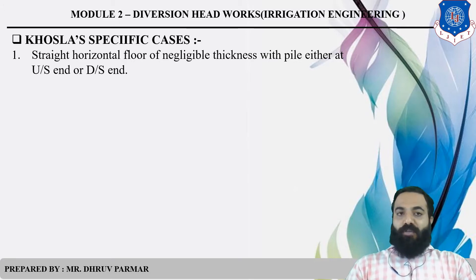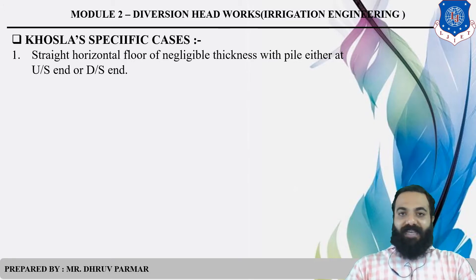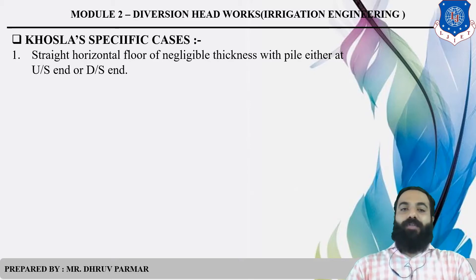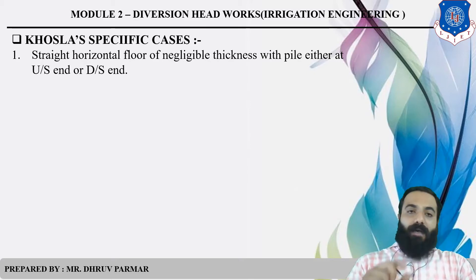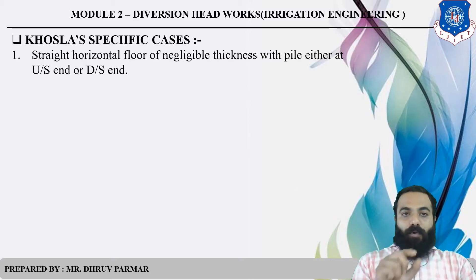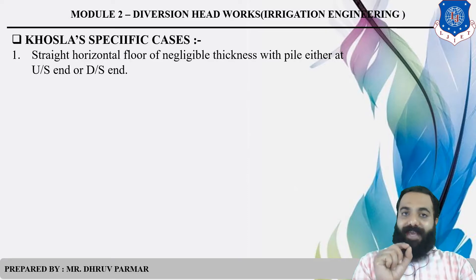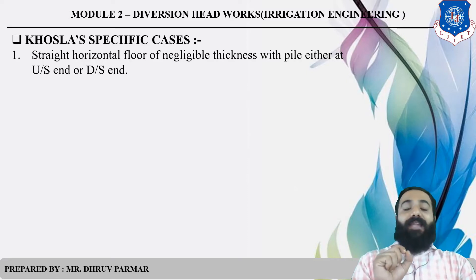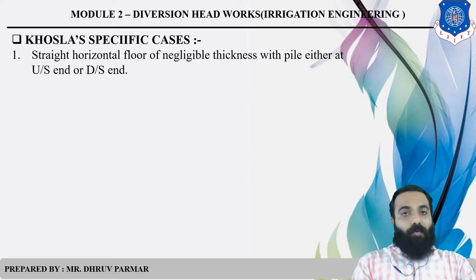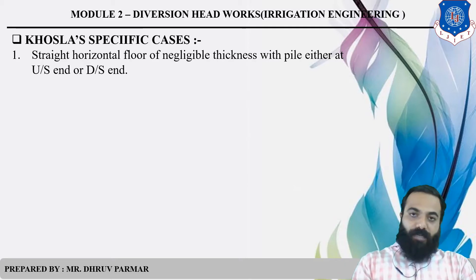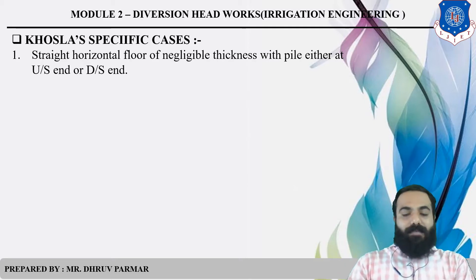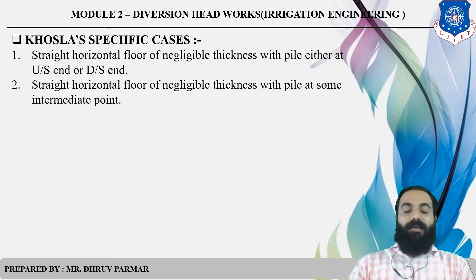The first case is a straight horizontal floor of negligible thickness with pile either at the upstream and downstream — the floor is given, the thickness is very negligible, and the pile is provided on both sides: upstream as well as downstream.